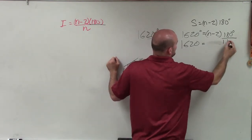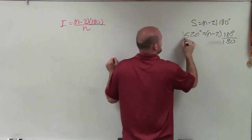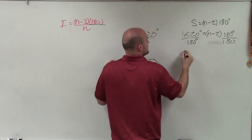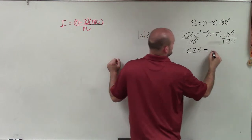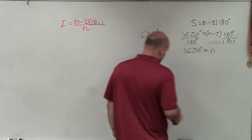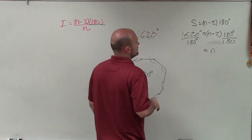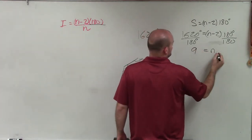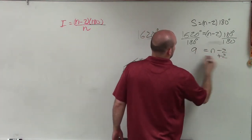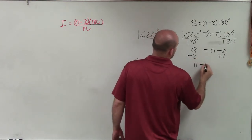I guess I forgot to divide by 180, right? So I divide by 180. 1,620 divided by 180 equals... I'm not even simplifying that. That is going to be 9 equals n minus 2. Then add 2. And I get 11 equals n.